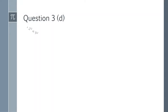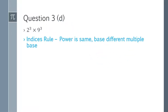Question 3d: 2^3 multiplied by 9^3. Same rule: different bases, same power — multiply the bases and keep the power. So it becomes (2×9)^3 = 18^3. That is the answer for question 3d.